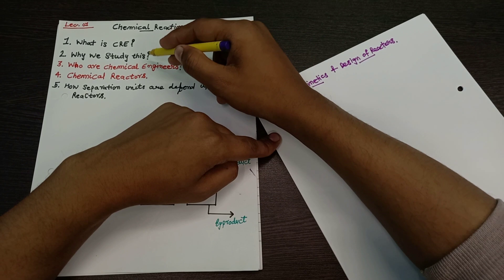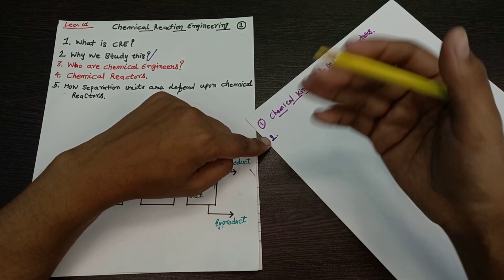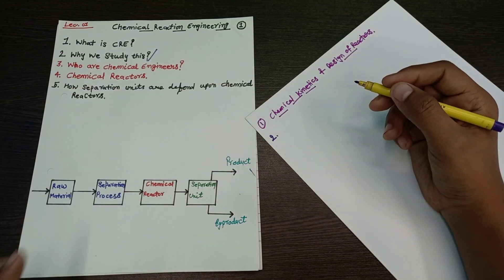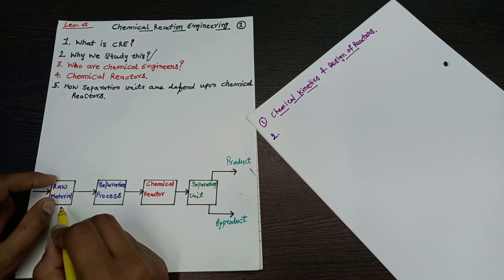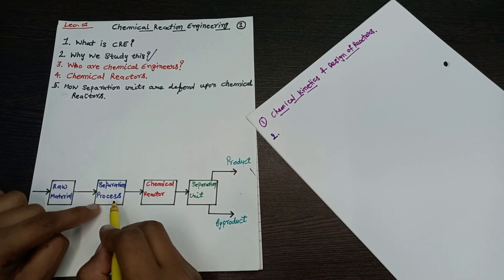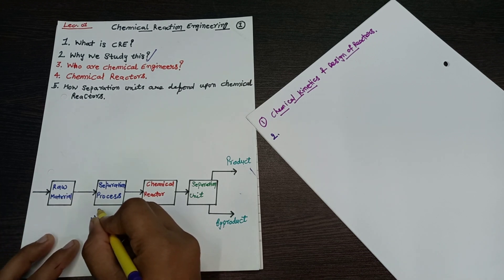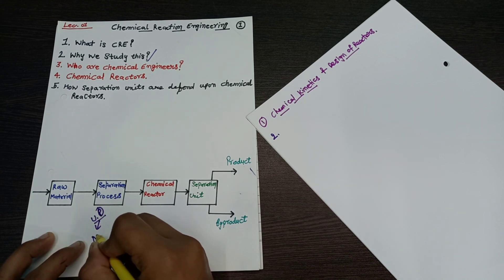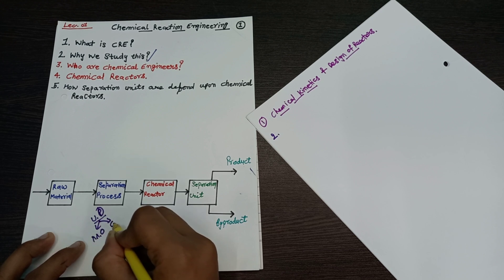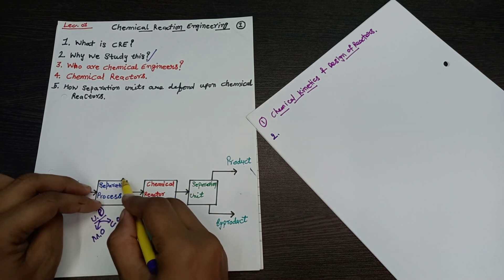The second topic is: why we study chemical reaction engineering? Looking at the block diagram, you can understand that there is a raw material which enters a unit, then it goes to a separation process — which is a unit operation, either a mechanical operation or a chemical operation such as mass transfer. Then this goes into a chemical reactor.